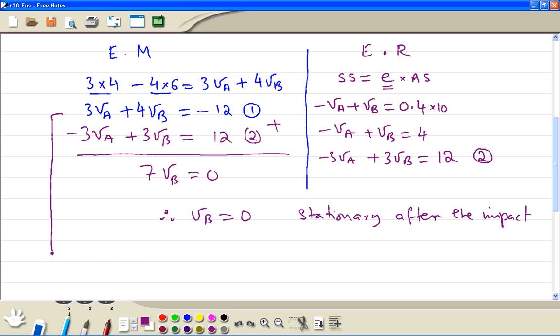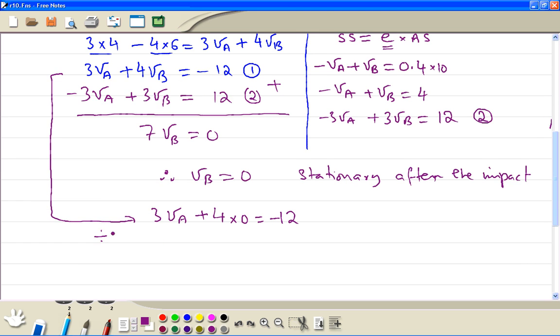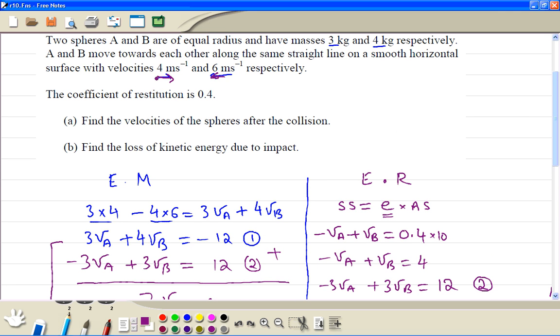Then we use this equation here. It's 3 times velocity of A plus 4 times 0 equal to minus 12. Then we divide, so we've got the velocity of A equal to minus 4. And now it's in the opposite direction to which it was travelling first. It was moving to the right first, now it's moving to the left.